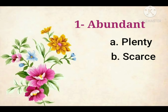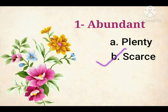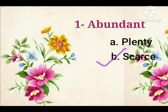First one is Abundant. Abundant means something that is available in large quantities. So the opposite of Abundant is Scarce. Scarce means insufficient.